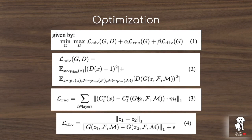The diversity loss encourages different source vectors z to produce different images — you want z1 to produce a much different image than z2, where these are random vectors that serve as the source for the generator network. This explicitly encourages diversity in the generated outputs, and together these three losses form the overall loss function that trains the Semantic Pyramid for Image Generation.